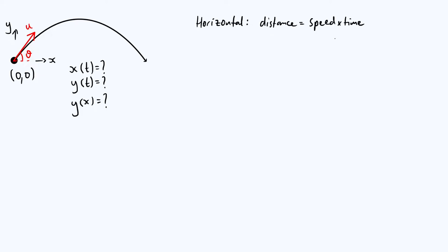The distance in the horizontal direction is just x, the x coordinate, so the left-hand side is x. The speed in the horizontal direction is what you get from resolving the initial velocity vector in the x direction. That component won't change over time because there's no acceleration, so we put u·cosθ here. The time is just t. So the equation x = u·cosθ·t is the equation of motion describing how the x coordinate changes with time — it just increases linearly.